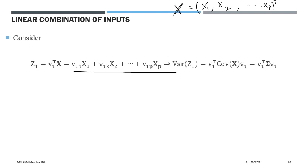Consider the first linear combination of all p attributes: z1 = v1^T * x. Here v1 is the direction in which we project all data points. The variance of this first linear combination z1 can be easily calculated in terms of the covariance matrix of x and the direction v1. Later we will see that v1 is the first principal component.